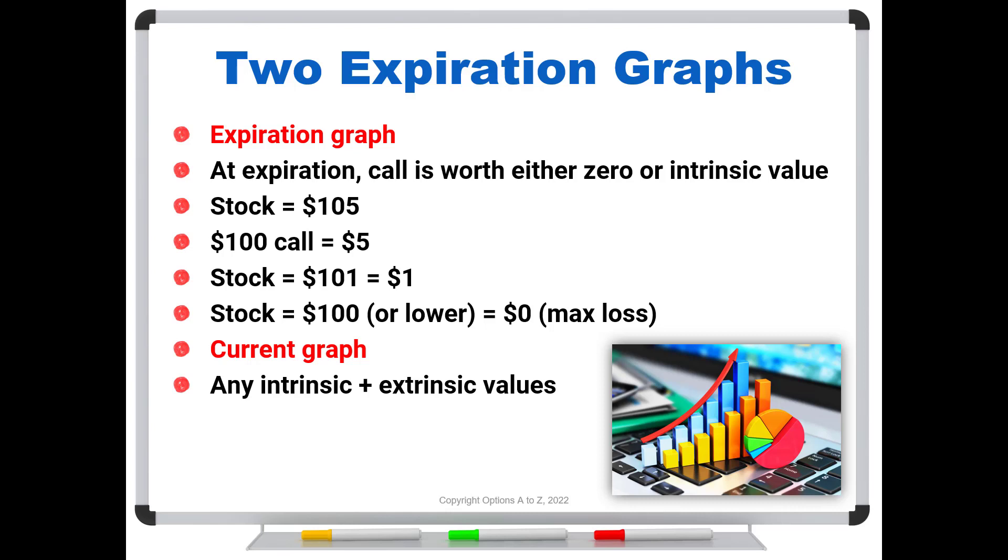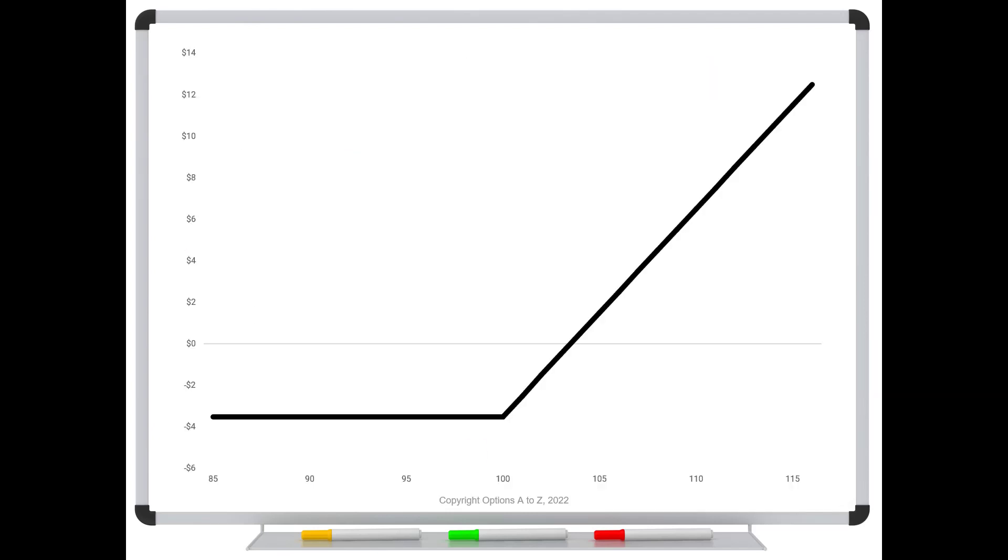For example, let's say that you buy the $100 call for $3.50. So this is the risk graph and as I always point out, we get a bend at the strike price. Because you purchased the $100 call, it lines up right there at $100. This black line is called the expiration graph.